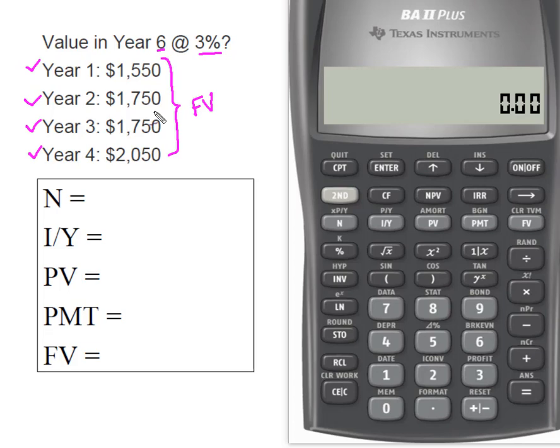So what we're going to do is we're going to break it down. We're going to find the future value of year one and year two, year three, year four. We're going to add them all together and that will give me the future value of this set of cash flows.